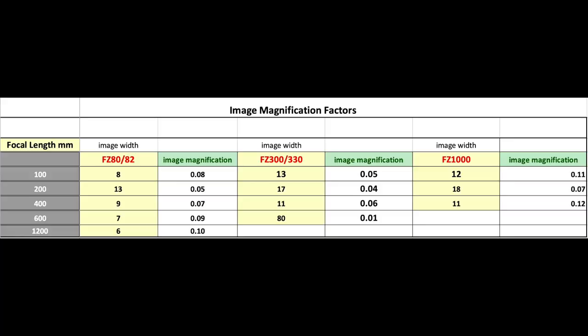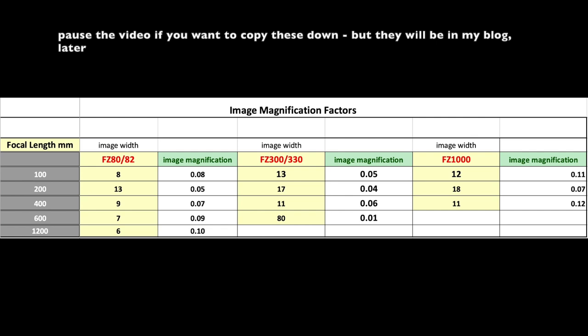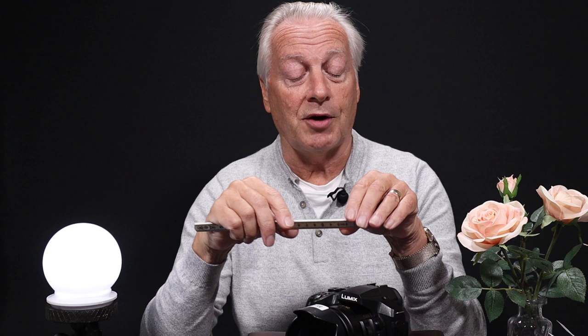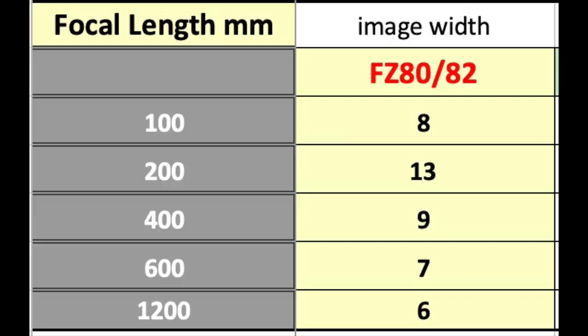To save you some time, I've actually created charts for each of these cameras — the FZ80, the FZ300, and the FZ1000. The manufacturing tolerances between these lenses should be very minimal, so what applies to my camera should really apply to yours. You can see the field of view at each particular focal length to get an idea of just how wide the subject will be at the closest working distance with the camera.